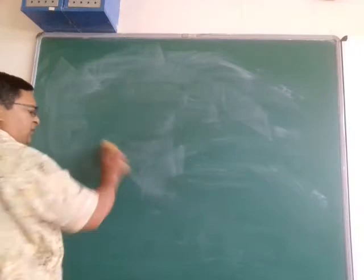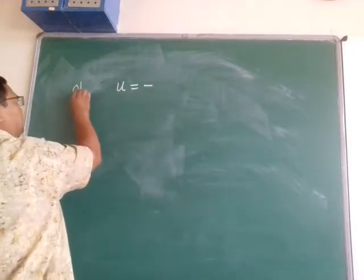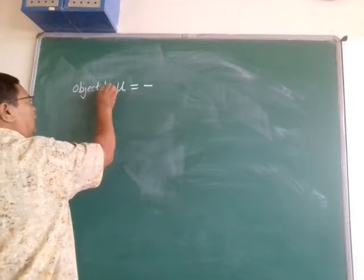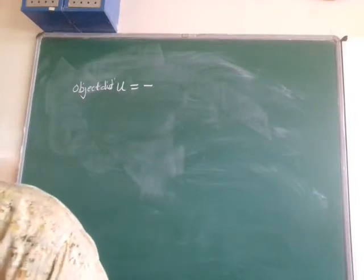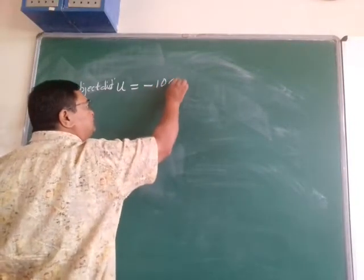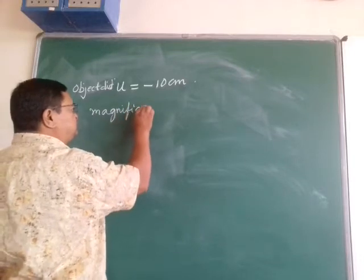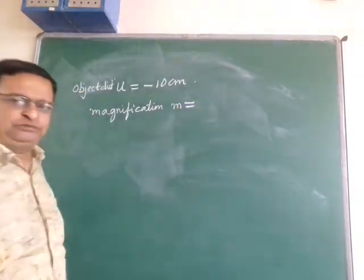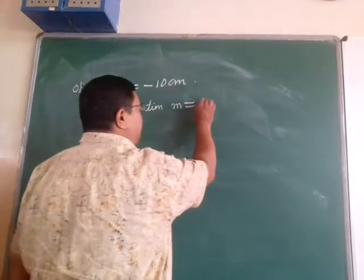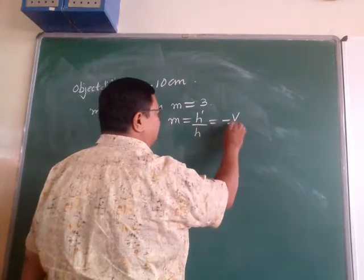Object distance u is equal to minus 10 centimeters. Magnification m is equal to 3 times, as given. We know that m equals h-dash upon h, which equals minus v by u.